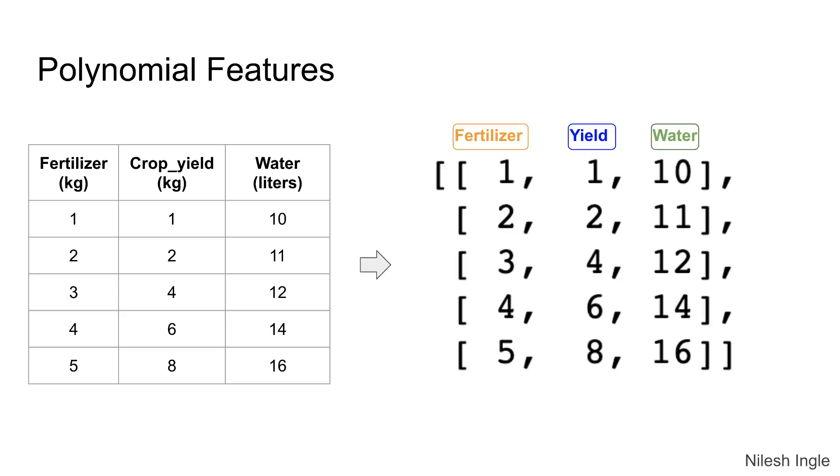These can be represented in an array as shown on the right hand side where each column represents a feature. Now in addition to just these features, a machine learning model also looks at the interactions between these features and tries to learn if there are any interactions.